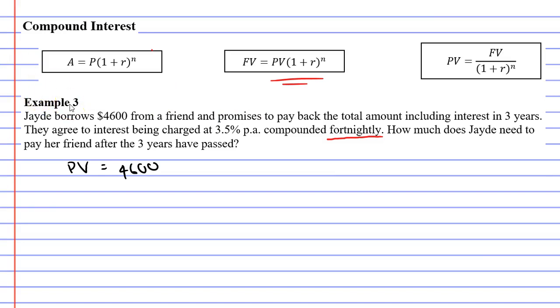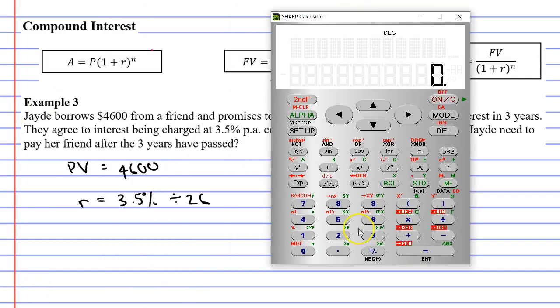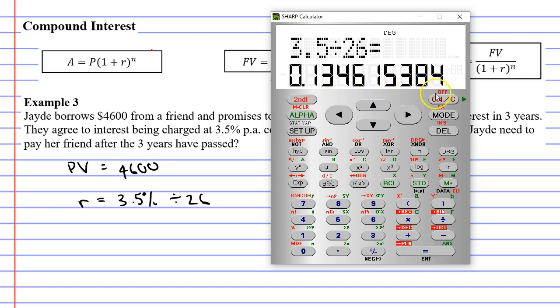Next, we'll calculate the interest rate r. The interest rate is 3.5% per annum, but if we want it done fortnightly, we need to divide this by 26. Bringing our calculator up, 3.5 divided by 26 gives us this really nasty decimal.